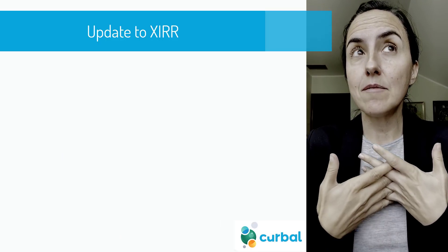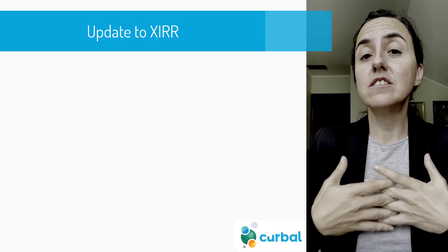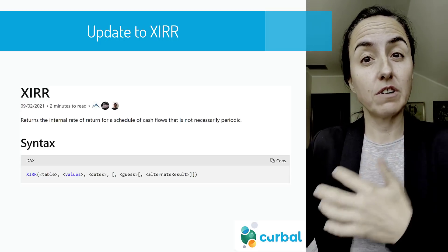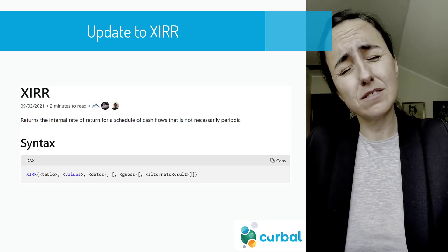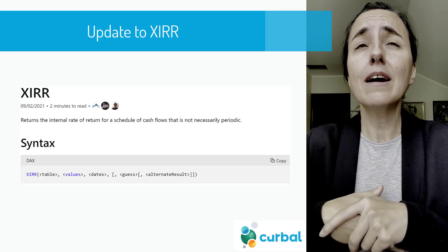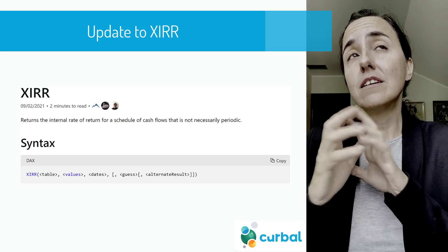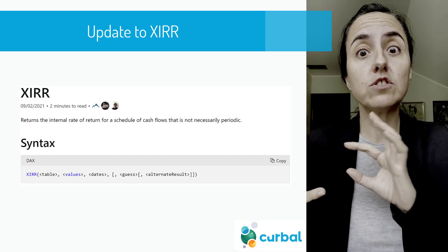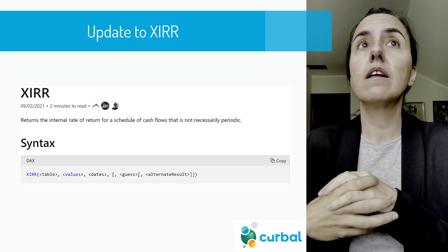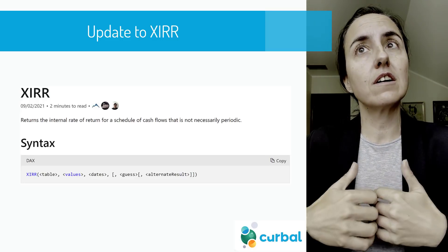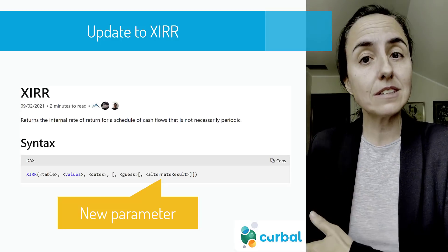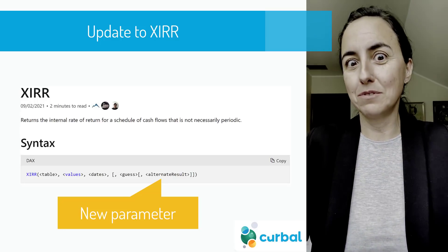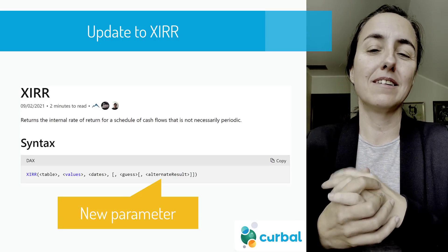They have also made some changes to the XIRR function, which calculates the internal rate of return. This is for finance people. Sometimes the function could not calculate, would not resolve, and would return an error. Now you can actually specify what it should return instead if it encounters an error. This is quite neat.